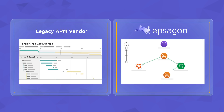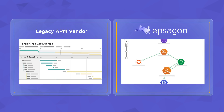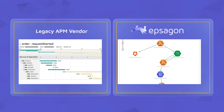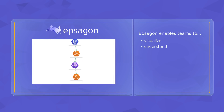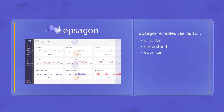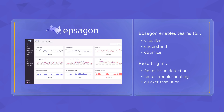EPSIGON eliminates legacy APM visibility gaps, enabling teams to visualize, understand, and optimize their microservice architectures, resulting in significantly faster issue detection, troubleshooting, and resolution times.